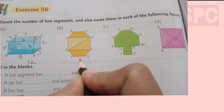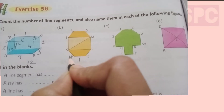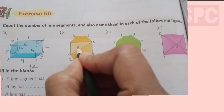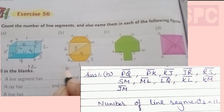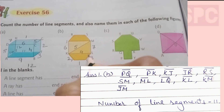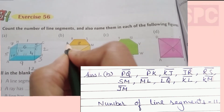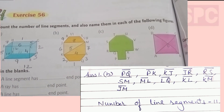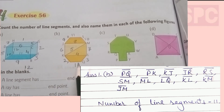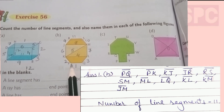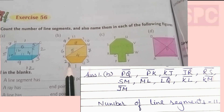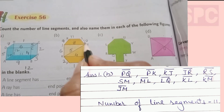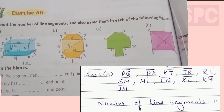For figure B, we number all the line segments and find there are a total of 11 line segments. The names of these line segments are: PQ, PK, KJ, JR, RS, SM, ML, LQ, KL, KM, and JM.